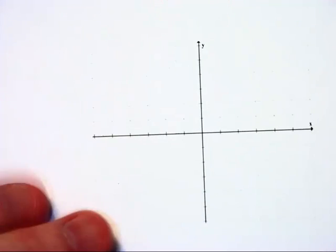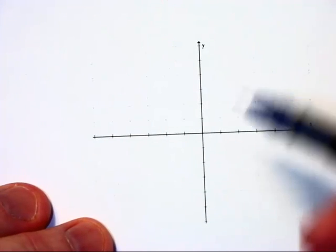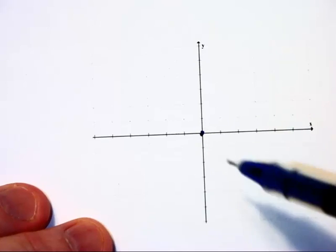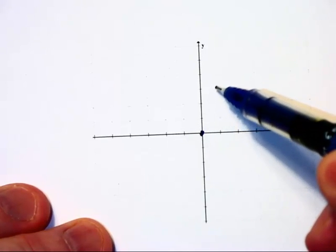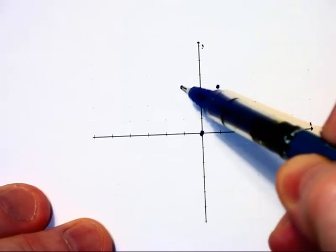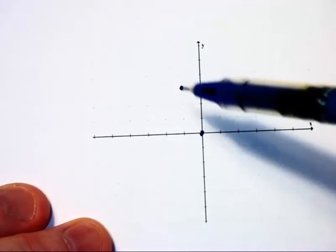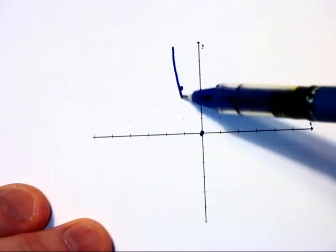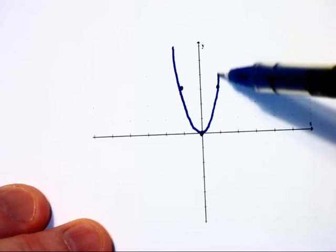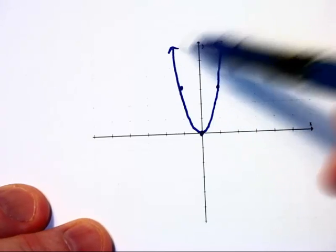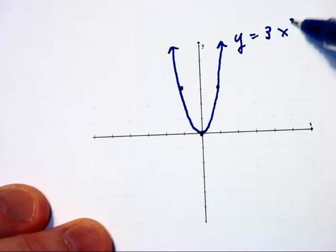All three of these graphs are going to go through the origin. Now y equals three x squared is going to rise three and run one to the right. And because of symmetry, it's going to rise three and then run one to the left also. So that would be the graph of y equals three x squared.